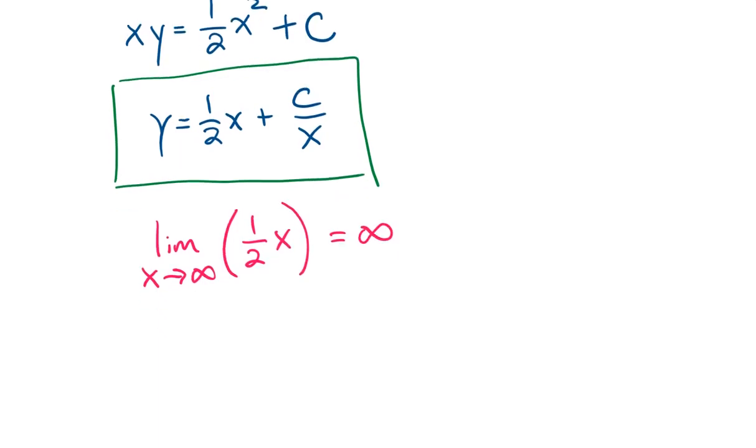Now, if we do the same thing to the other term, which is the limit as x goes to infinity of c over x, then what this will equal is 0, because x will grow indefinitely in the denominator, and the c will stay the same in the numerator, and this will equal 0.